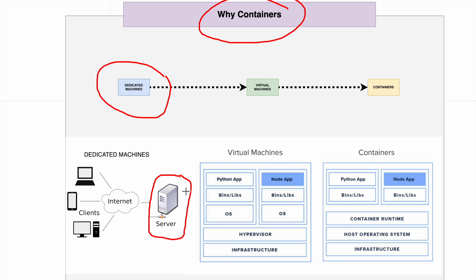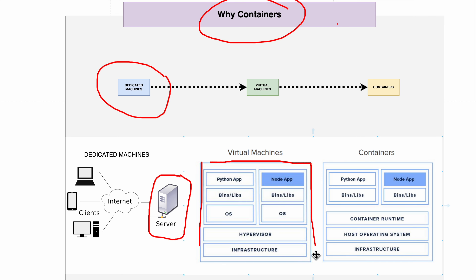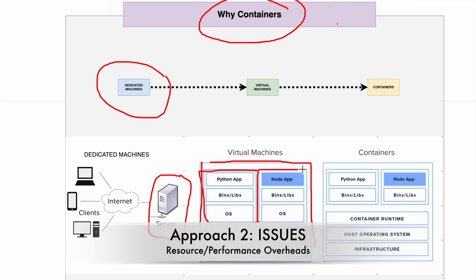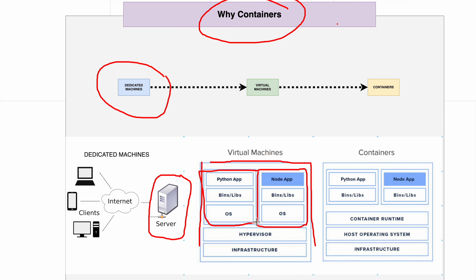The entire machine resources were dedicated for that specific application. Then a need was identified that the same server machine could be used for different applications, potentially running on different operating systems. That's where we had the concept of virtual machines. In a virtual machine, you have a host machine — the same server machine we saw in dedicated machines — where you can have multiple different OS instances.